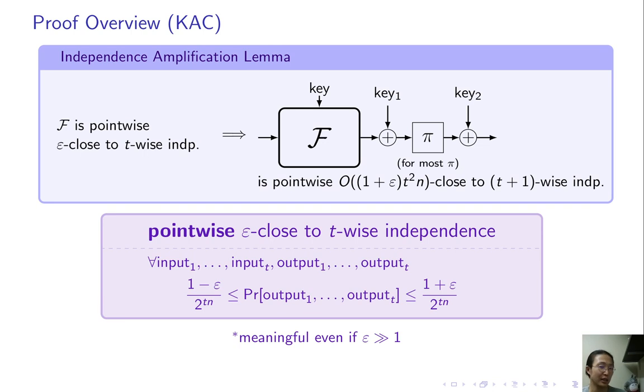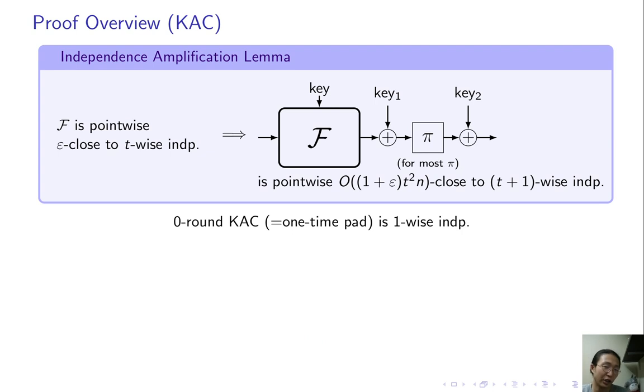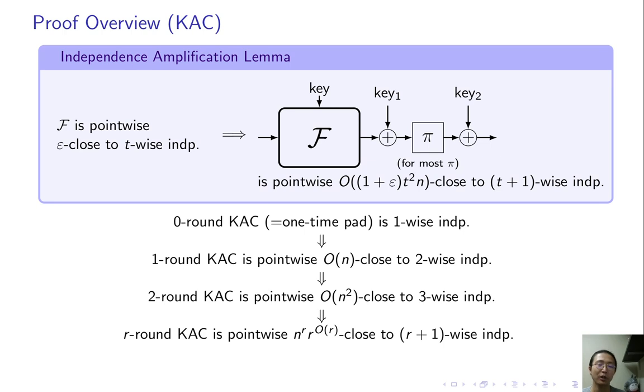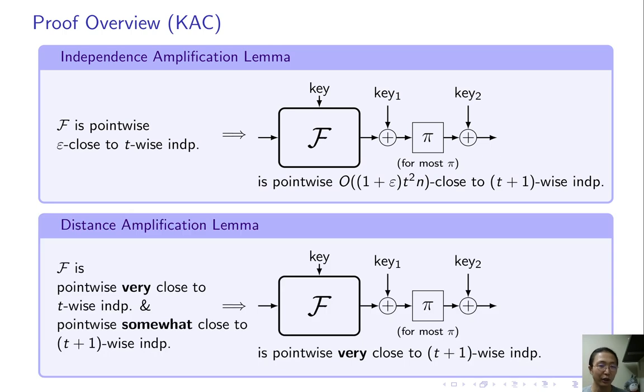The independence amplification lemma already implies something interesting. Zero round KAC, which is one-time pad, is one-wise independent. Then, by repeatedly applying independence amplification, R round KAC is somewhat close to R-plus-1-wise independence. The distance is huge, but this is already a non-trivial result. This can be complemented by another lemma, we call it distance amplification lemma, which is also proved by probabilistic method. If f is very close to T-wise independence, and it's somewhat close to T-plus-1-wise independence, then adding one more round will make it very close to T-plus-1-wise independence.